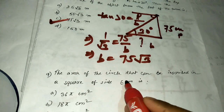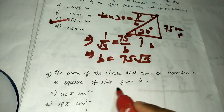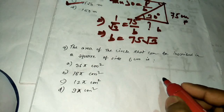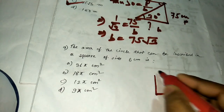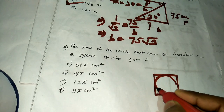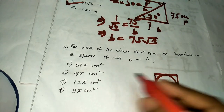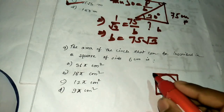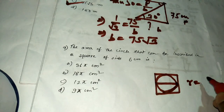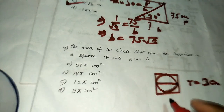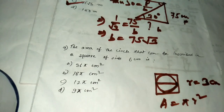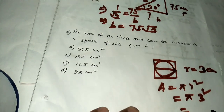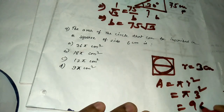Question number nine: the area of a circle that can be inscribed in a square of side 6 cm. Draw the square with the circle inside. The diameter of the circle equals the side of the square, so diameter = 6 cm, meaning radius = 3 cm. Area = πr² = π × 3² = 9π.